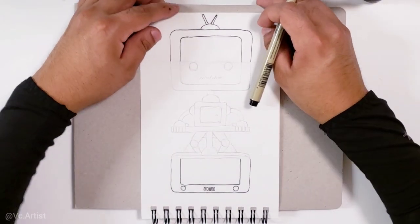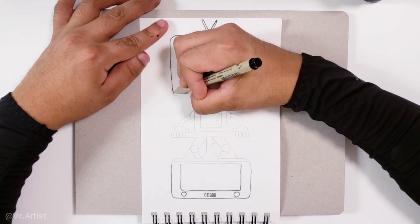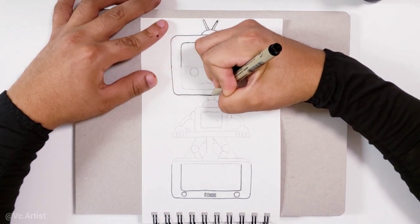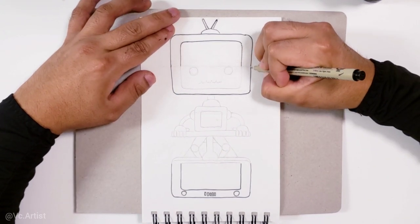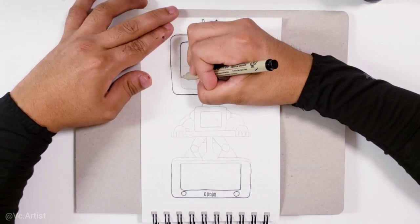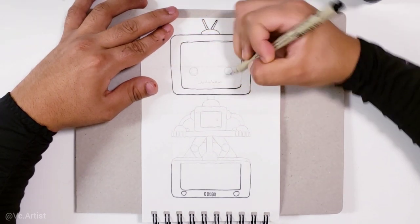Once we do this, we're gonna unfold the drawing, or open it, and we are going to draw everything that looks incomplete. For example, the box, which is also the head of the robot, and the box inside, which is the screen and also the face of the robot.